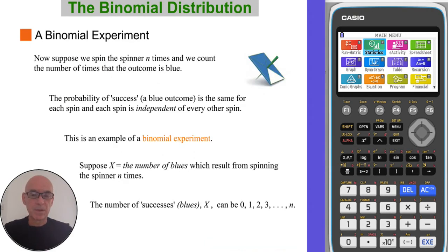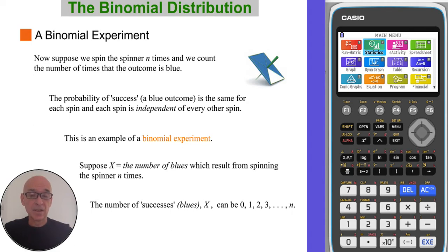Now suppose we spin the spinner n times and count the number of times that the outcome is blue. The probability of success — getting a blue outcome — is the same for each spin, and each spin is independent of every other spin. So this is an example of a binomial experiment. If X is the number of blues which result from spinning the spinner n times, the number of blues can be anything from zero to n.